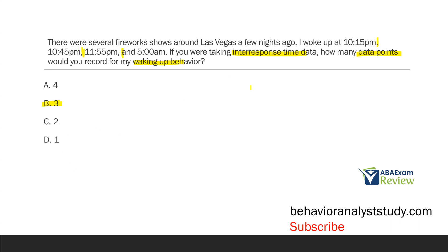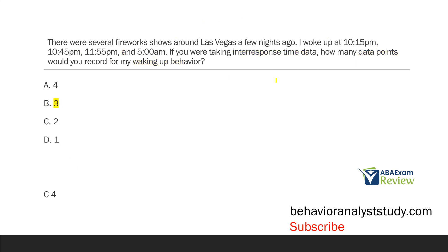So right after 10:15 is when data would start. 10:15 to 10:45 would be our first inter-response time; 10:45 to 11:55 would be second; 11:55 to 5 a.m. would be third. We're going to take three instances of inter-response time. One would represent latency — latency is time between the ESD, which would be the fireworks going off and me waking up. The fireworks to the 10:15 would be our latency, and then all of these intervals would be our inter-response times. So we're taking three data points for waking up behavior.